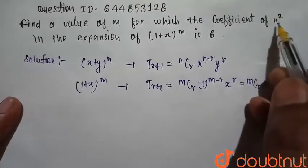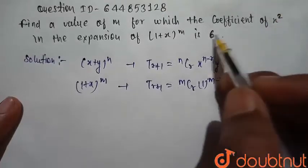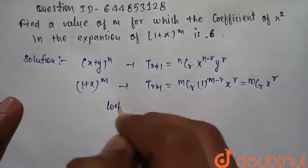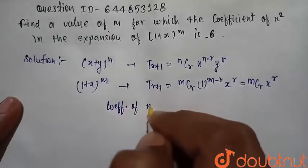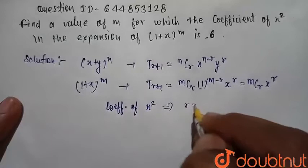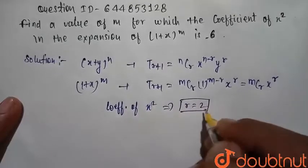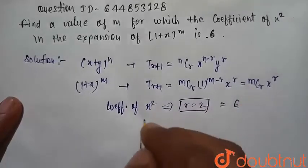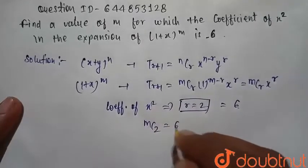We want to find the coefficient of x square, which is 6. For coefficient of x square, that implies r is equal to 2. So mC2 is equal to 6.